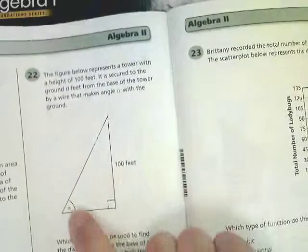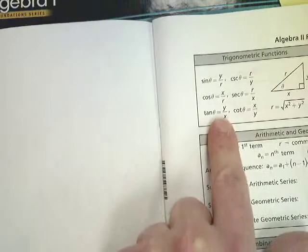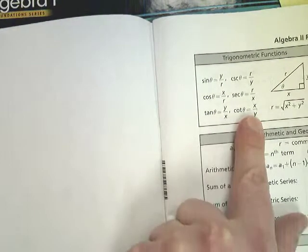Now I have the opposite and the adjacent. So I'm going to look for opposite and adjacent. I have opposite and adjacent being y and x. So my only choices really are tangent and cotangent.